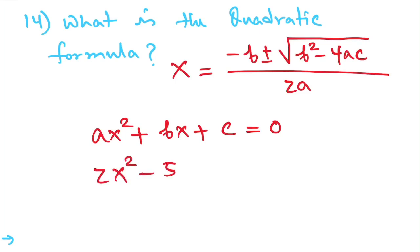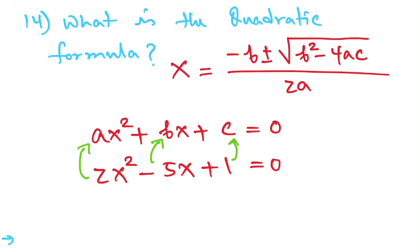The quadratic equation looks like ax² + bx + c = 0. For example, 2x² − 5x + 1 = 0. Using the quadratic formula you can solve for x, where a = 2, b = −5, and c = 1.